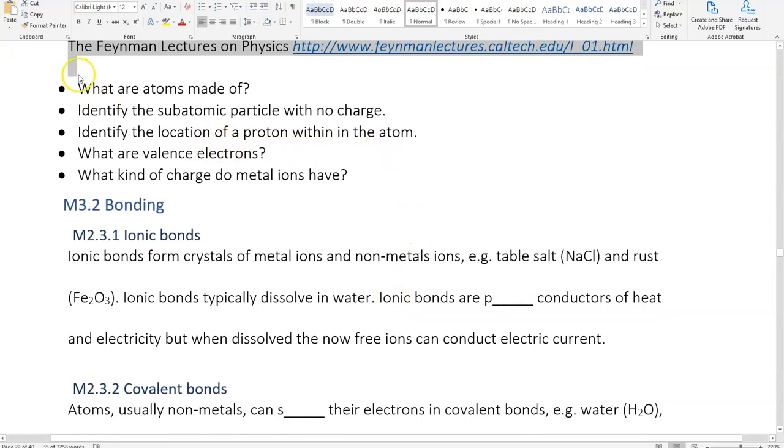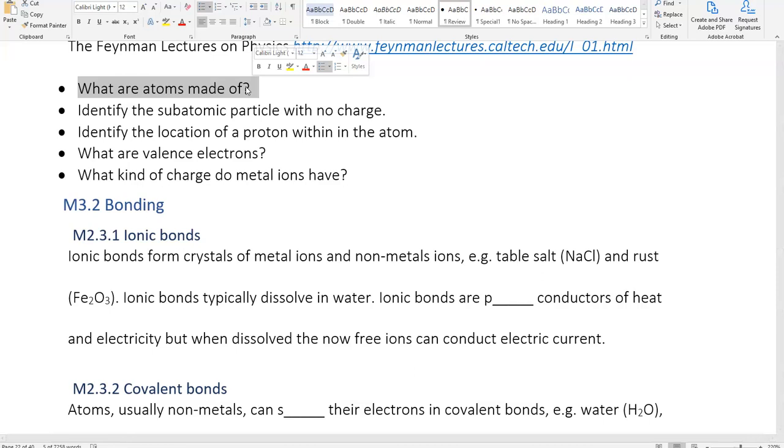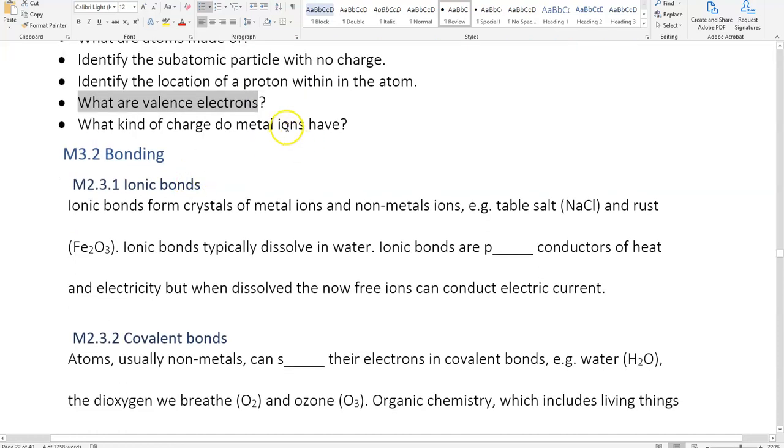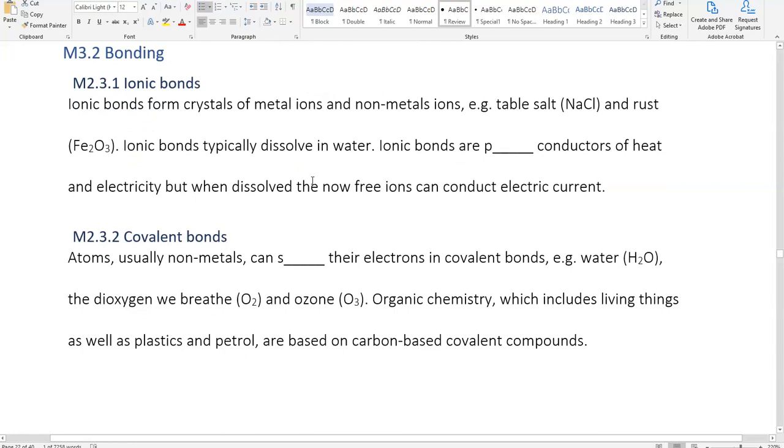Here are the review questions. What are atoms made up of? Our answer is protons, neutrons, and electrons. Identify the subatomic particle with no charge. That would be a neutron. The location of the proton is in the nucleus. What are valence electrons? They're the electrons that are in the outer orbital, or the outer shell. What kind of charge do metal ions have? Well, they've just lost electrons, and electrons are negative, so they've become positive.